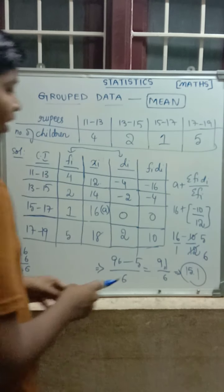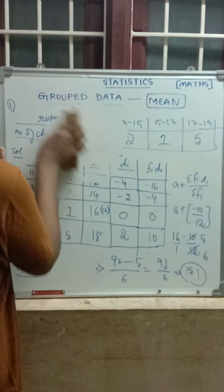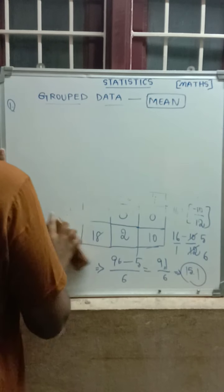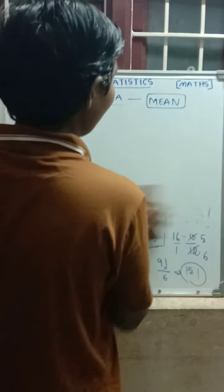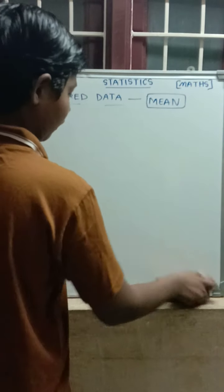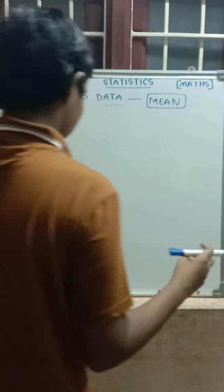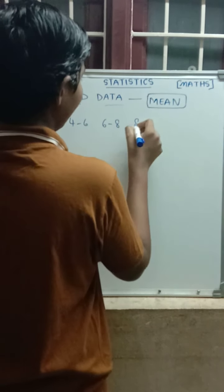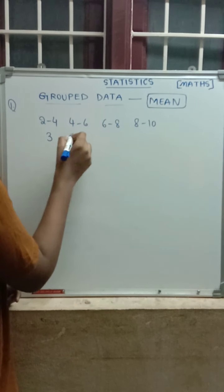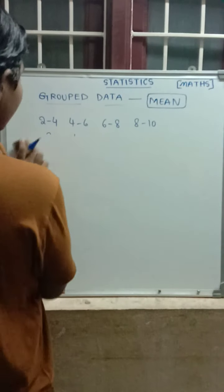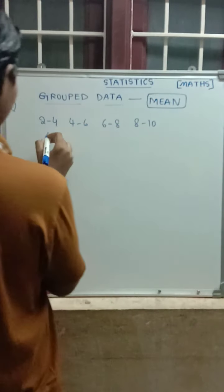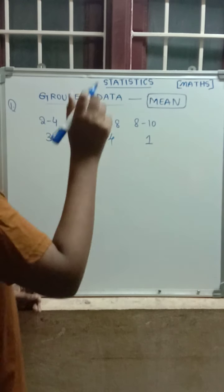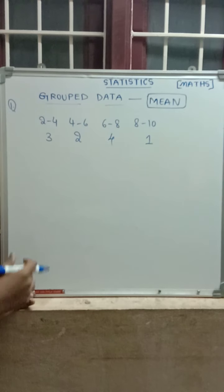Now let's see another example. In the previous video, I took a question and said that if we solve it by all three methods we get the same answer. Even this sum, if we do in the three methods, we will get the same answer. So we will try this using the assumed mean method. The class intervals from that previous question are: 2 to 4, 4 to 6, 6 to 8, and 8 to 10.